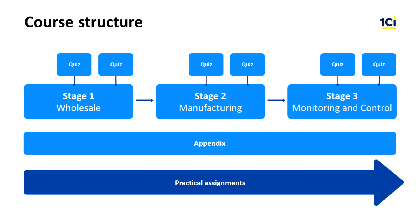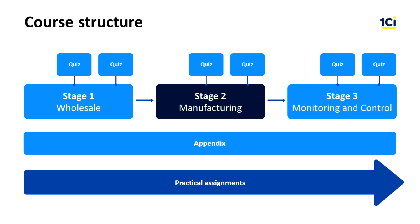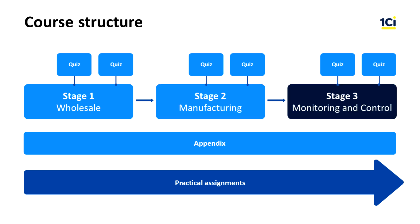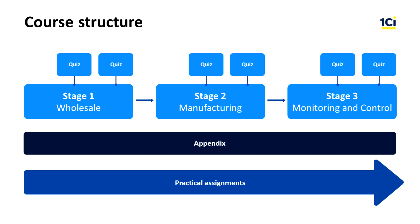The course is divided into stages and at each of them the students will deepen their knowledge about 1C ERP. Stage 0, the current stage, provides an overview of the system and its capabilities. Stage 1 describes how to process main operations of the wholesale trade company, considering a fictional company SBS Trading which sells hoverboards as an example. Stage 2 adds the ability to execute the production process in 1C ERP. Stage 3 is final and gives the student an understanding of budgeting, financial and management accounting in 1C ERP. The Appendix contains lessons on configuration and administration.